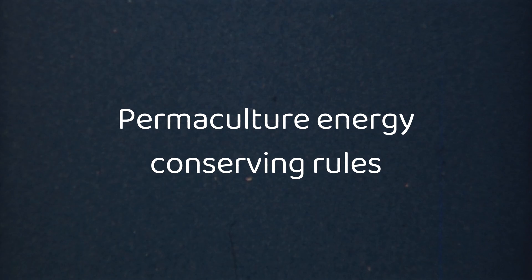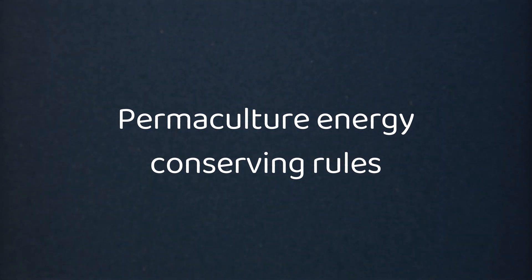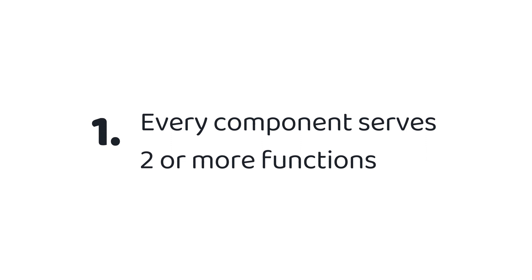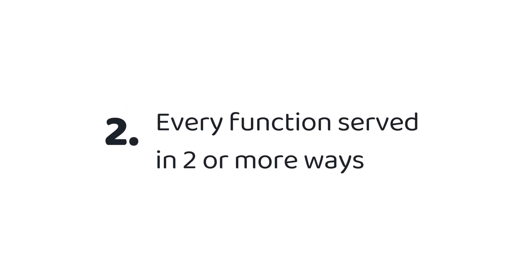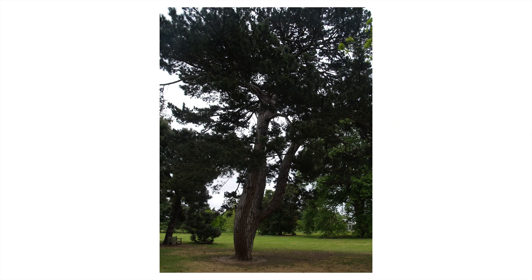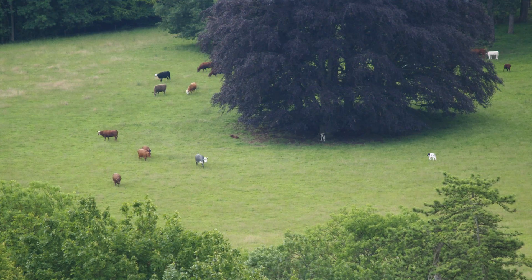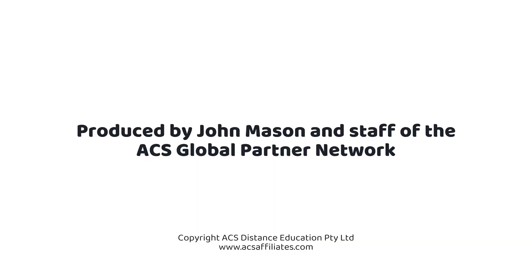For components to be positioned well in a system, both the zone and sector energies must be optimal. Every component should be placed so that it serves two or more functions, and every function is served in two or more ways. For example, a pine tree is not visited often, so it can go into Zone 4. It can also go in the sector away from fire danger, since it burns readily, and towards a cold wind, because it makes a good windbreak. The tree may also provide shelter for animals, as well as nuts for forage.